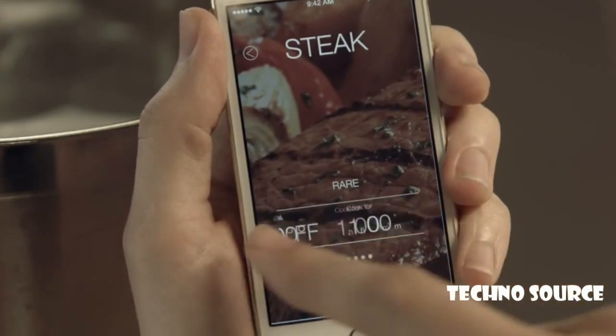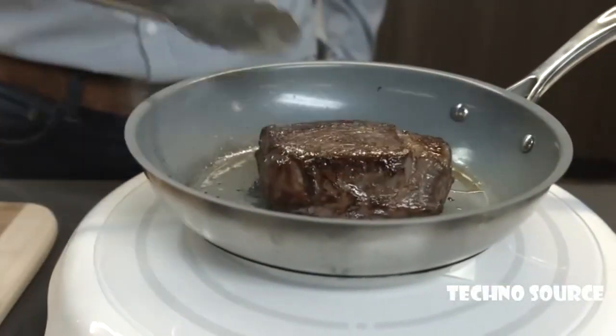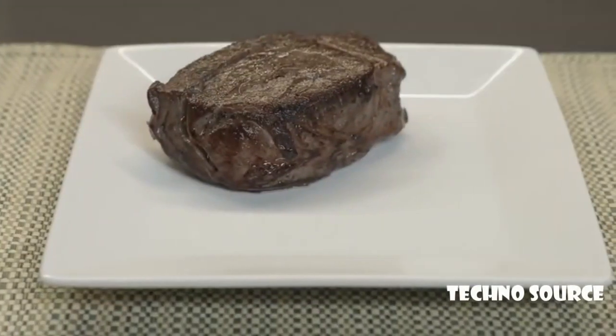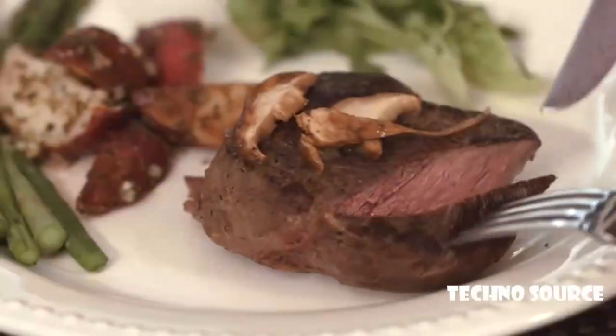You can use the optional Paragon mobile app to find the right time and temperature for your food in three simple touches. Paragon maintains precise water temperature to cook food evenly throughout. Once it's done cooking, briefly sear and serve. With sous vide, you can achieve edge-to-edge medium rare, medium, well, or whatever you like.